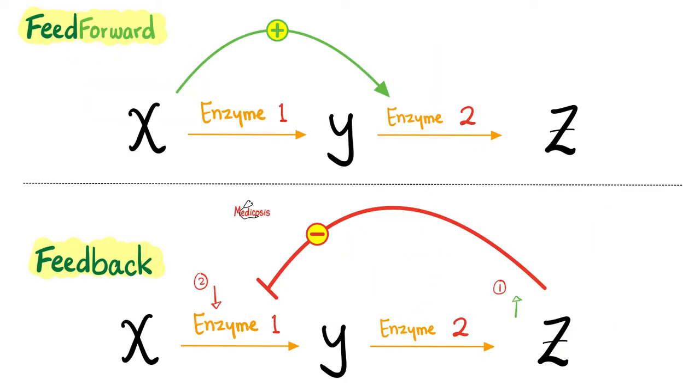Example of feedforward, which is rare. Here is X, and then Y, and then Z. And we have enzymes on the arrow. If X is boosting a process that is yet to come in the future, this is feedforward. But if X led to Y, led to Z, and then the increase in Z led to decrease in the enzyme before it, this is feedback.